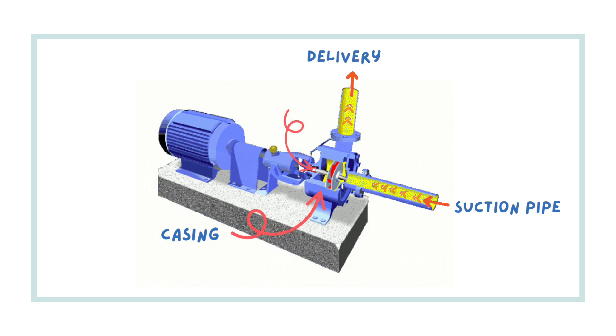There is the delivery pipe where the fluid exits from the outlet of the centrifugal pump. Then there is a pump shaft which connects the impeller to the shaft of the motor.